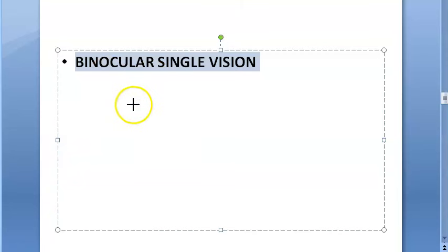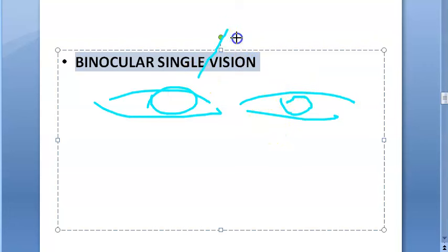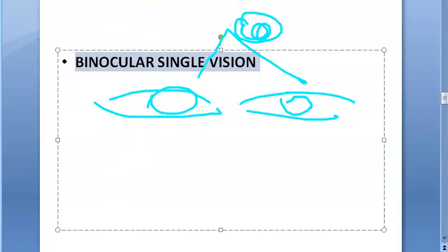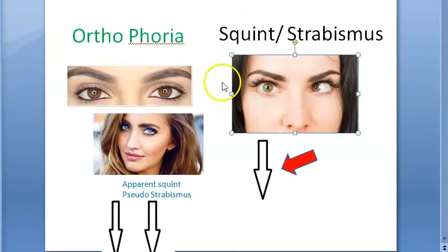There are laws about how extraocular muscles move: Hering's law of equal innervation and Sherrington's law of reciprocal innervation. There is also the concept of binocular single vision - even though you are seeing with two eyes, the brain produces only one image.